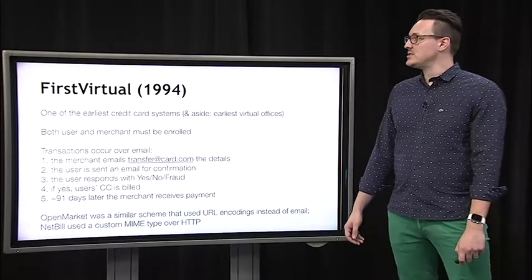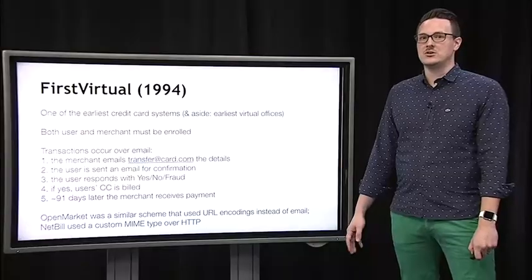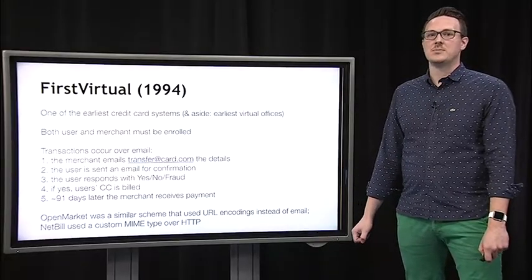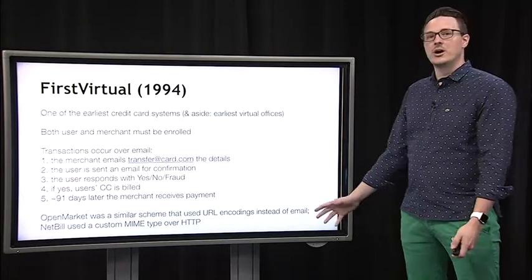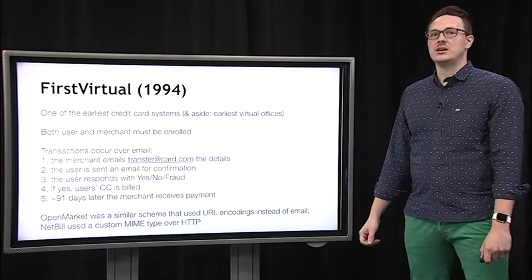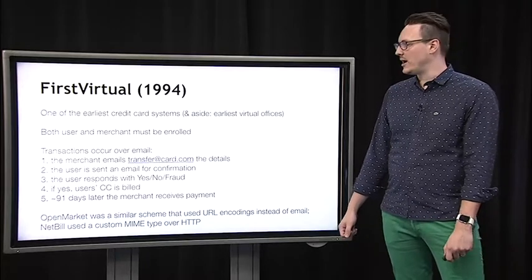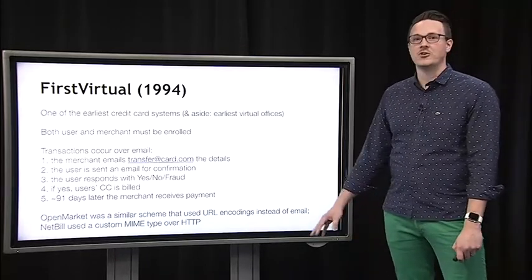Two other systems to use this architecture are Open Market and Net Bill. What's interesting is to look at what protocols they used to send transactions back and forth. First Virtual was based on email. In Open Market, it was based on encoding information into the URL. For Net Bill, they used a custom MIME type over HTTP.